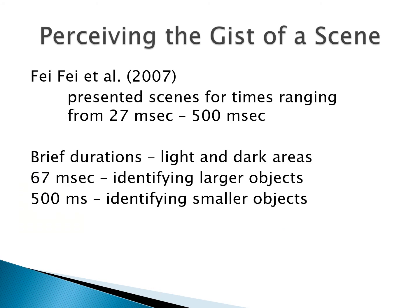With a target picture, people were almost at 100% accuracy. With a target description — like 'girl clapping' written out — we're still at about 90% accuracy, and again that's with 250 milliseconds. Fefe et al. 2007 presented scenes for times ranging from 27 milliseconds — about 1/50th of a second — to 500 milliseconds, half a second. At 27 milliseconds, all people could say was where the light and dark areas were. At 67 milliseconds they could identify larger objects. By 500 milliseconds they were identifying smaller objects.